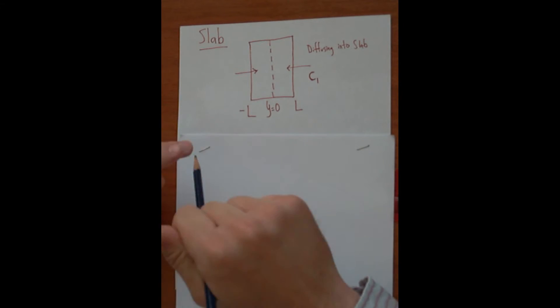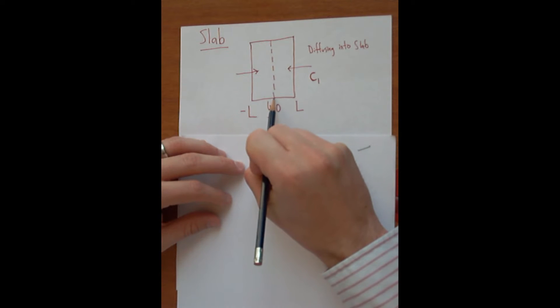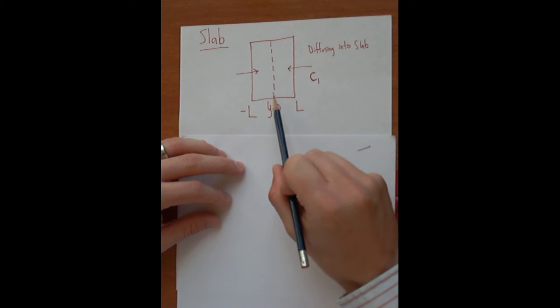To set up our slab, we're going to make the coordinate system where Y equals zero right in the center of the slab, and then the half thickness of the total slab would be Y equals L.